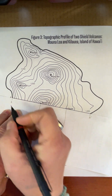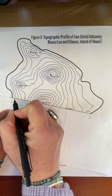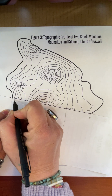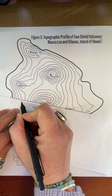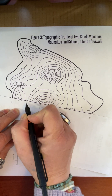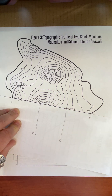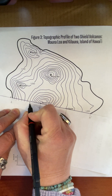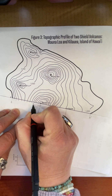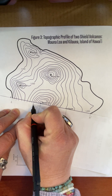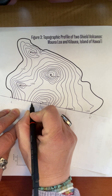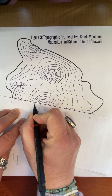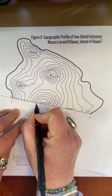Now all you're going to do on this piece of paper is put little marks everywhere that a contour line crosses your paper — every single one, all the way across. How straight the mark is doesn't matter; what matters is where it is on the edge of the paper. You don't care about anything else.